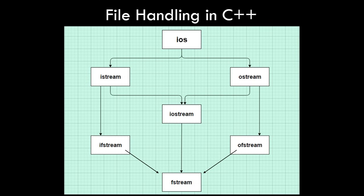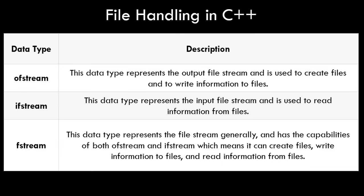Now let's try to write a program where we take input from the user, write it to a text file, and then open that same text file and read what we've written. The ofstream data type represents the output file stream and is used to create files and write information. ifstream is used to perform input operations from a file. fstream represents the file stream generally, with capabilities of both ofstream and ifstream for performing both operations, and we need to include that header file as well.